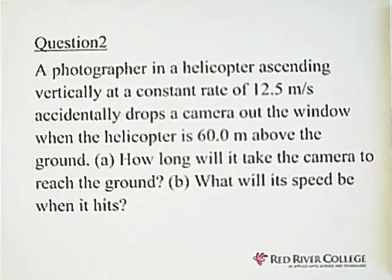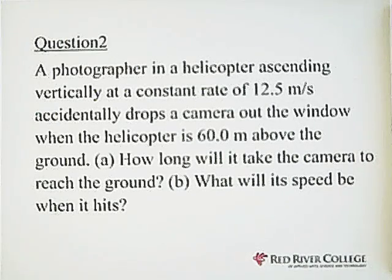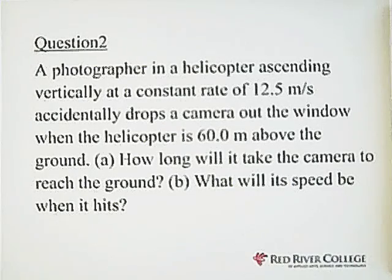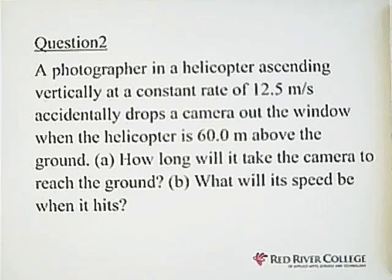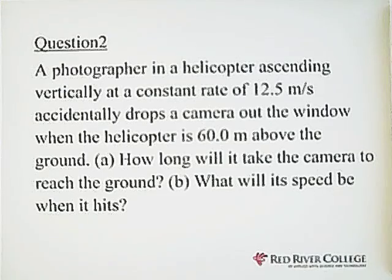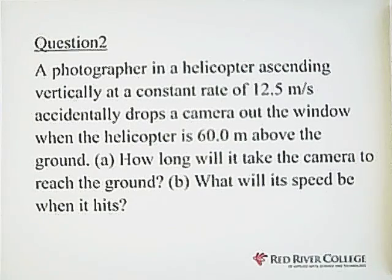Question 2. A photographer in a helicopter ascending vertically at a constant rate of 12.5 meters per second accidentally drops a camera out of the window when the helicopter is 60 meters above the ground. We're looking for how long it will take the camera to reach the ground, and also what its speed will be when it hits the ground.